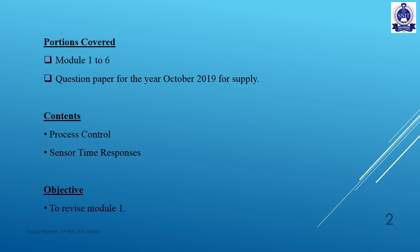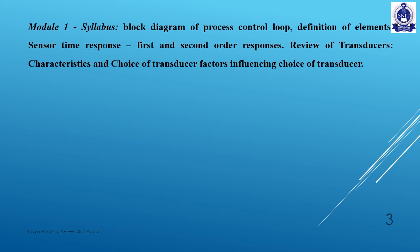My main objective is to revise the first few topics. If you are interested in the first two modules, we are going to divide this into three sections. The first section covers the Process Control Loop — its definition of elements and block diagram. The second section covers Sensor Time Response — first order and second order systems. The third section covers transducers, their characteristics and applications.